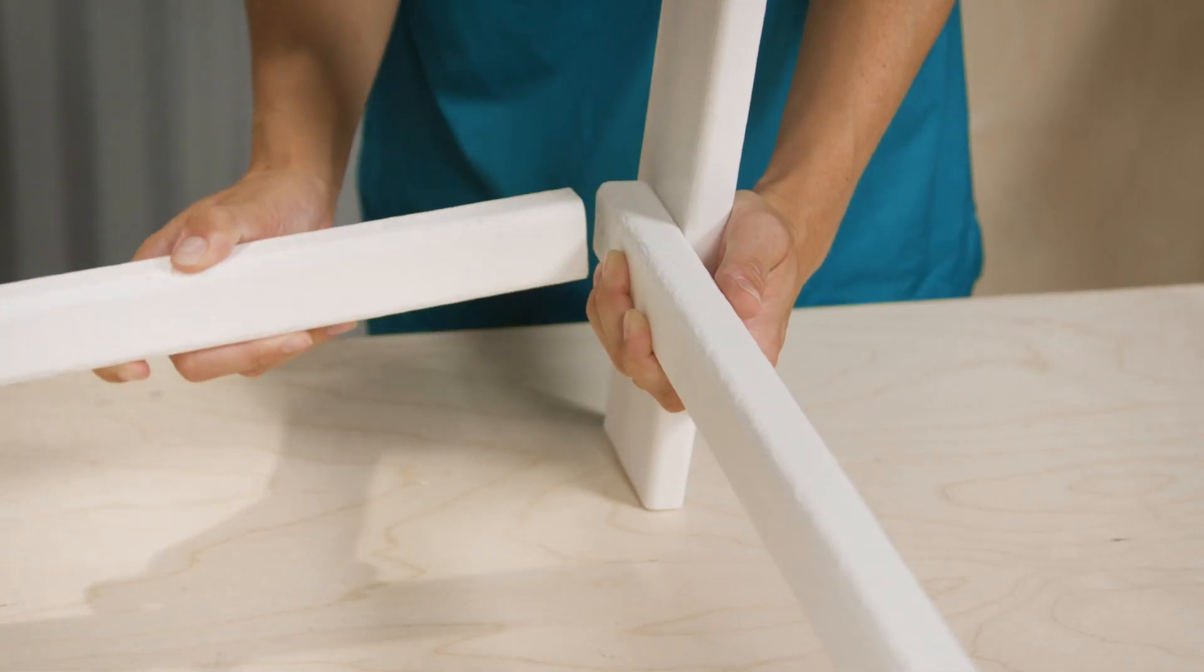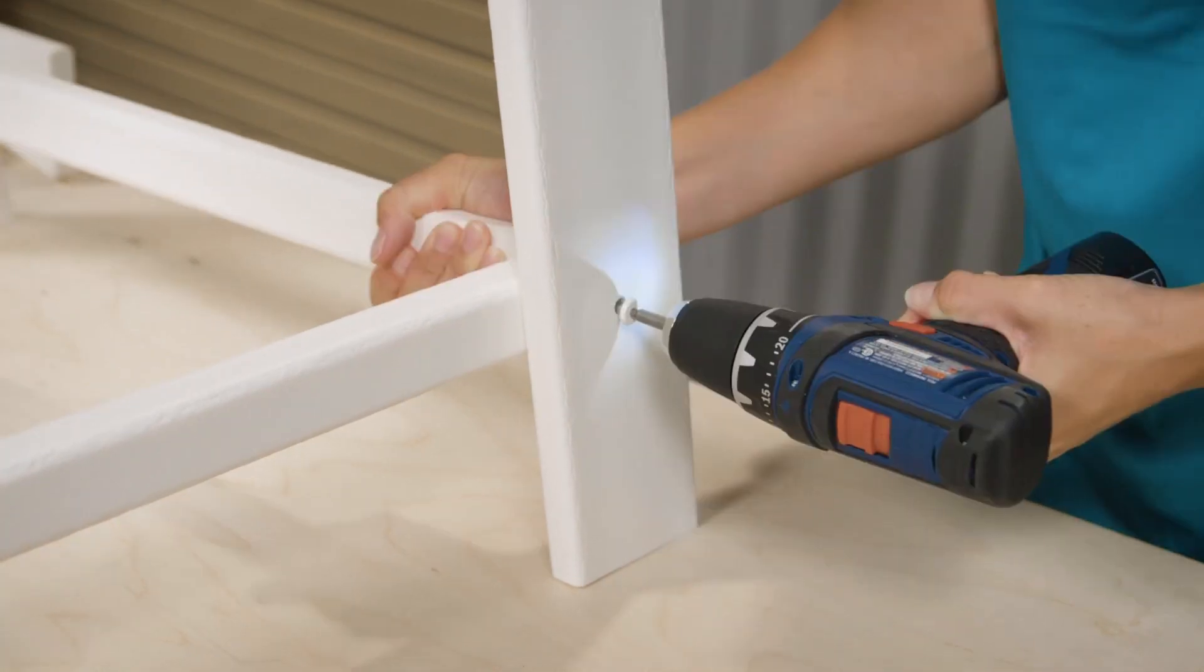Use one 3 inch screw to attach the back left leg and the left side brace to the back brace.